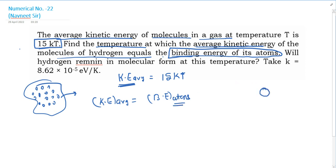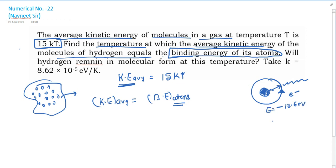Binding energy of atoms — what happens in the atoms? Hydrogen has only one electron — this is the only electron atom. The ground state of the atom: the electron and the nucleus of the atom. So if I consider the amount of energy, how much is the total energy? How much will the binding energy be?